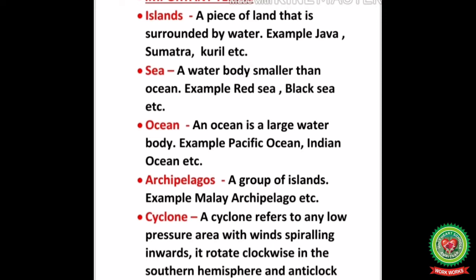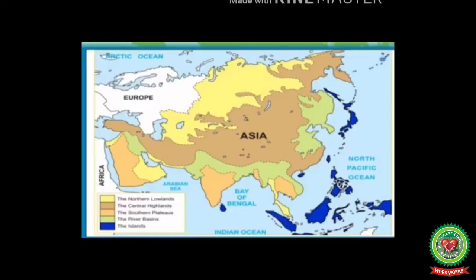Number five: cyclone — a cyclone refers to a low pressure area with wind spiraling inward. It rotates clockwise in the southern hemisphere and anti-clockwise in the northern hemisphere. Now let's start with the topic — the island groups or archipelagos.